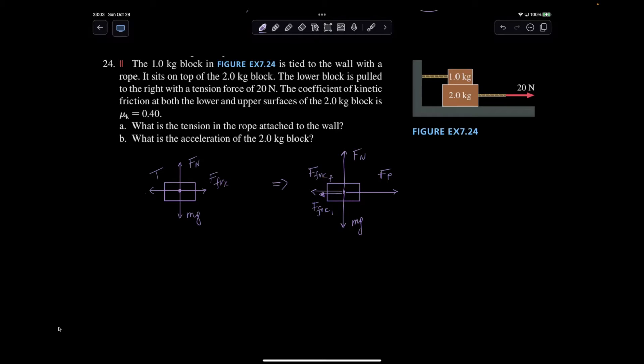Now, what is the tension in the rope attached to the wall? Well, that's easy. Tension is going to be mu mg and it's going to be 0.4 times 1 times 9.8.